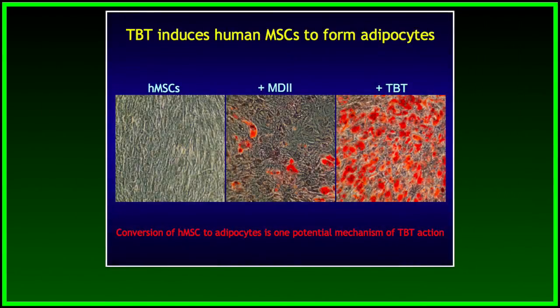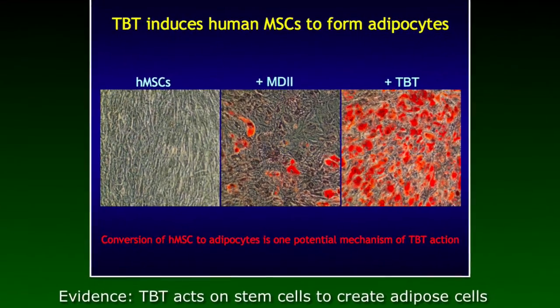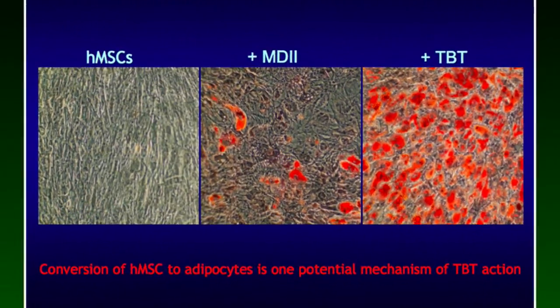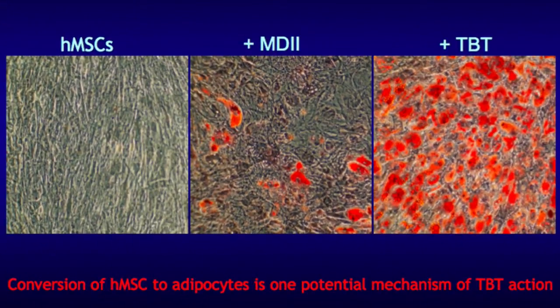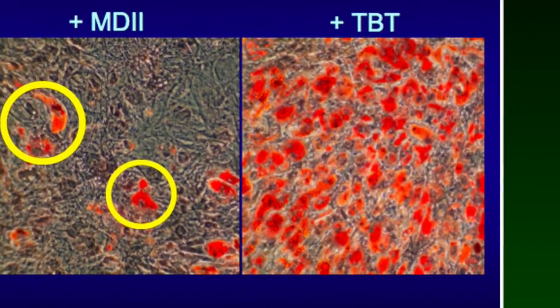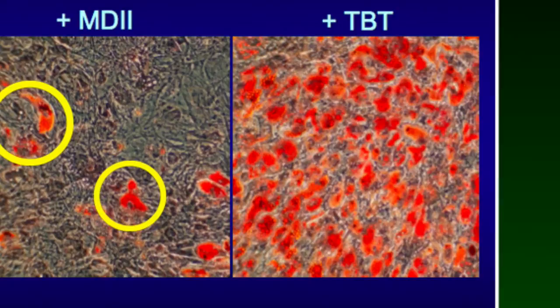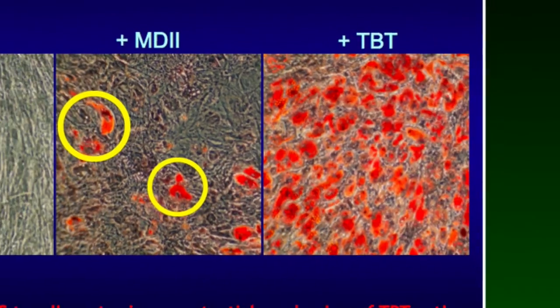The answer is yes. The panel on the left shows how the cells look if they are not treated with any chemicals. The image in the middle illustrates what happens if you give the cells a sensitizing cocktail — a few normal cells become fat cells, shown in red. The image on the right reveals that if you give the cells tributyltin, you make a lot of them into fat cells. They are everywhere. So TBT can program these animals to become obese before they are even born by predisposing MSCs to become adipocytes, essentially changing the way genes are expressed.